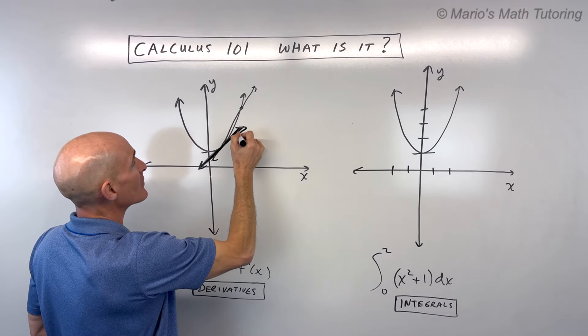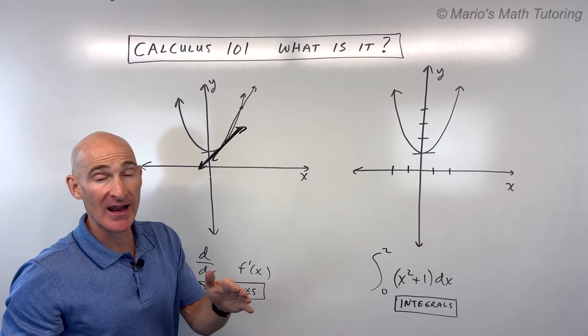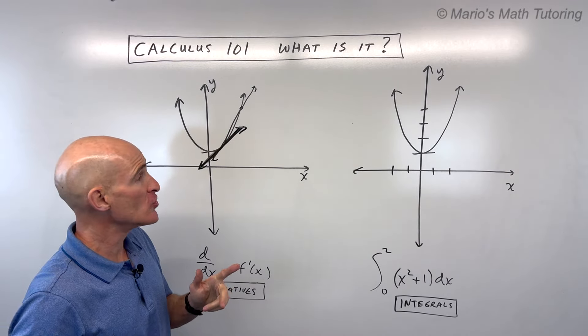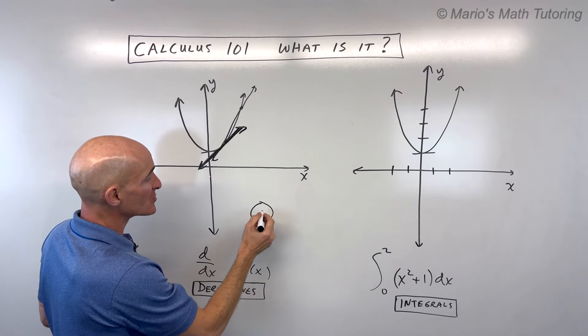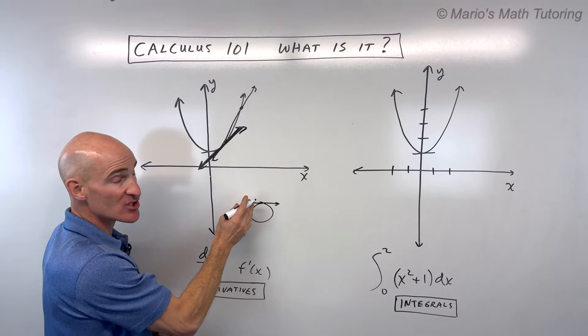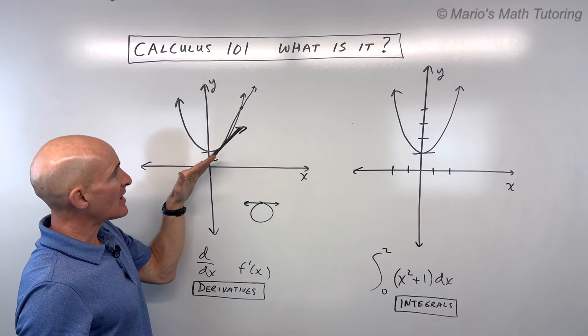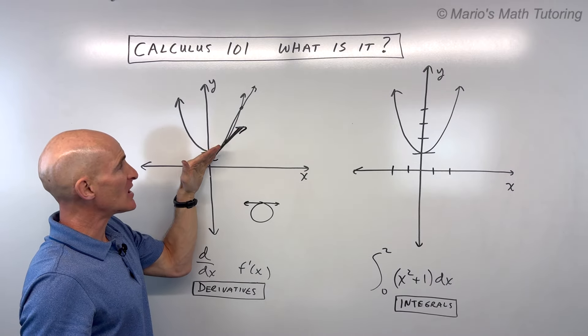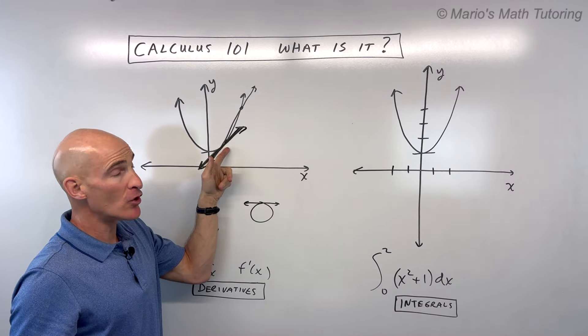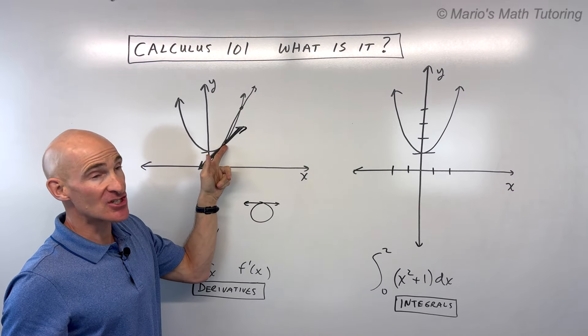That's this line right here, and that's referred to as a tangent line. It just barely touches the graph. You may remember this from geometry when you had circles and you had like a tangent to a circle, it just touches it at one point. That's what's happening here. This tangent line, we're getting the instantaneous rate of change, which is referred to as the slope of this tangent line.